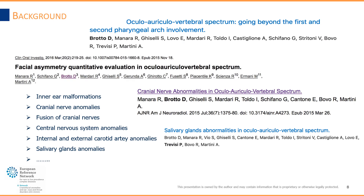The most recent literature and studies performed by our group showed that imaging is crucial to evaluate these patients. MRI and CT imaging is essential to detect anomalies that cannot be detected clinically. For example, in our cohort we observed inner ear malformations, cranial nerve malformations, anomalies of the central nervous system, anomalies of the internal and external carotid artery, and anomalies affecting the salivary glands.